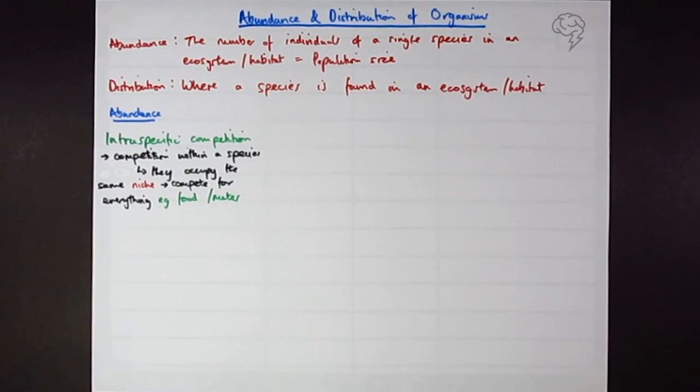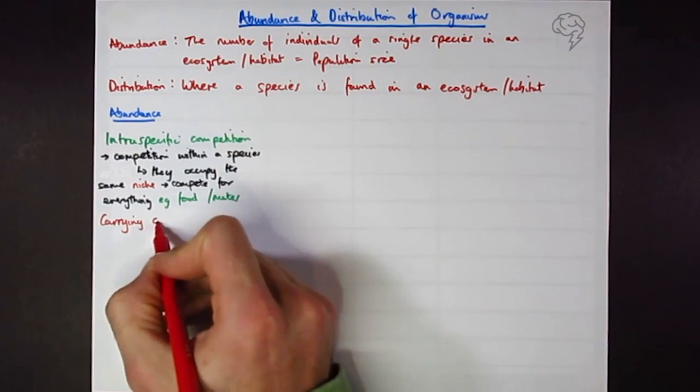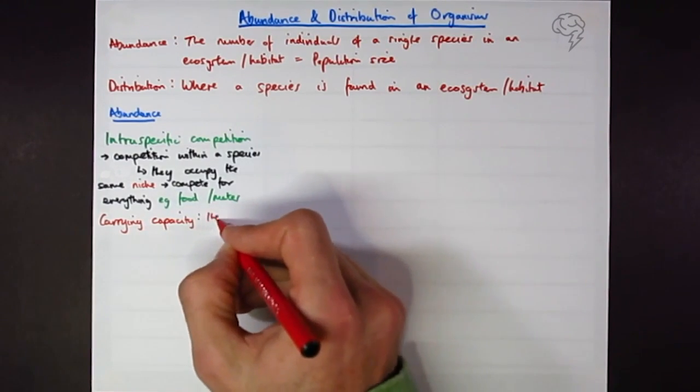Now we're going to come across another term called carrying capacity, and this is the maximum stable population that an ecosystem can support. Capacity - the amount of how much it can carry, how much it can hold.